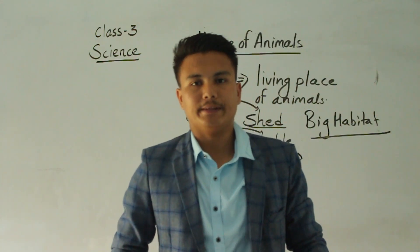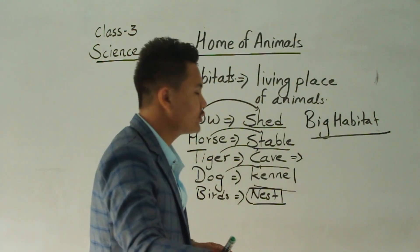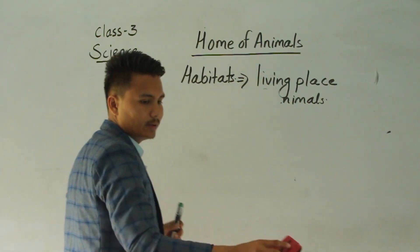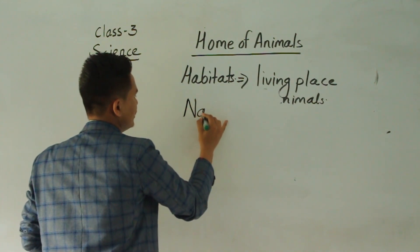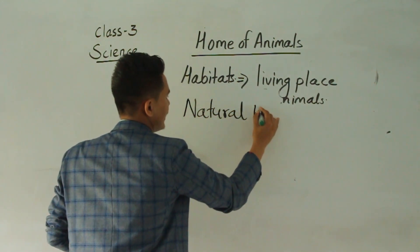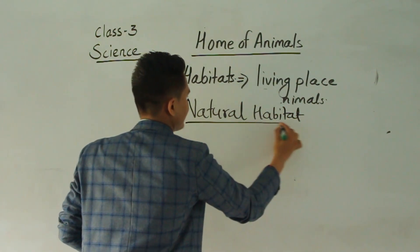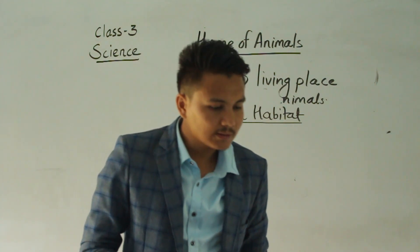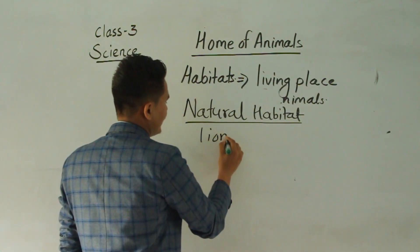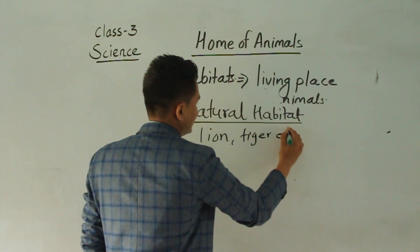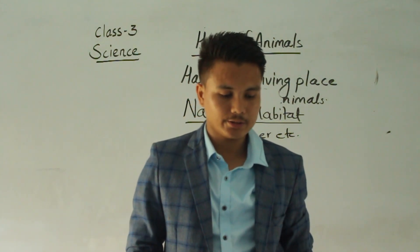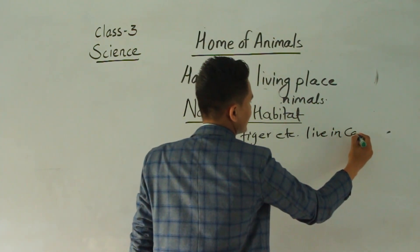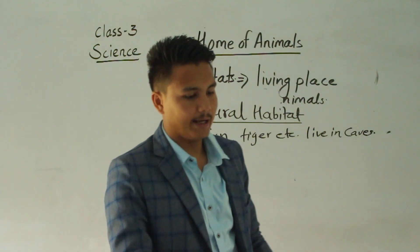Some animals live in natural habitats. Can you give me an example of a natural habitat? Natural habitat means a home made by nature. Examples are lion, tiger, and so on. They live in caves — that is their natural habitat.